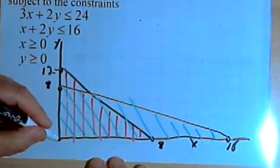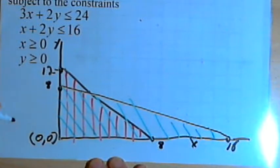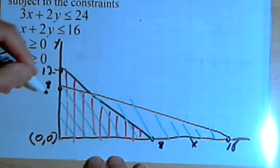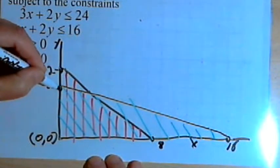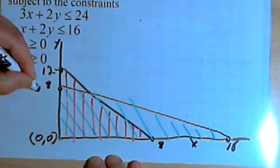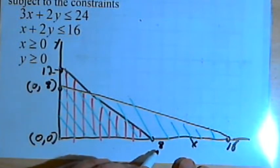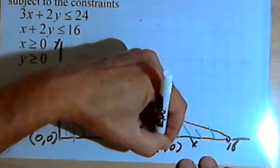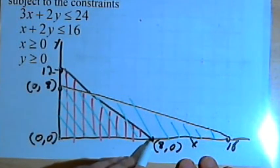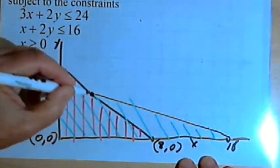We know three of them. At the origin, the corner coordinates are 0, 0. On the y-axis at the y-intercept of 8, the coordinates for that point would be 0, 8. On the x-axis at the x-intercept, the coordinates for this corner point would be 8, 0. We have to find the last corner point where the two lines intersect.